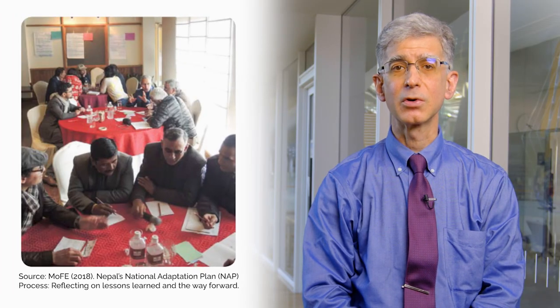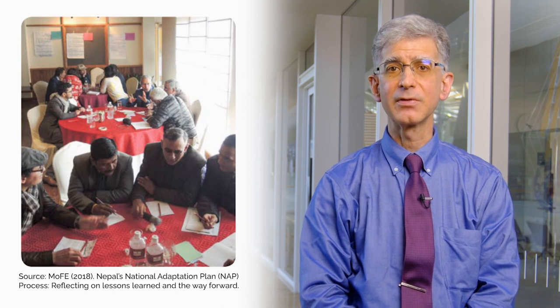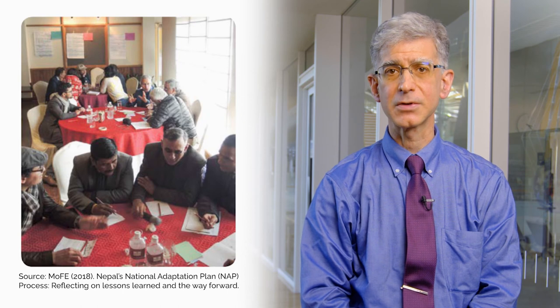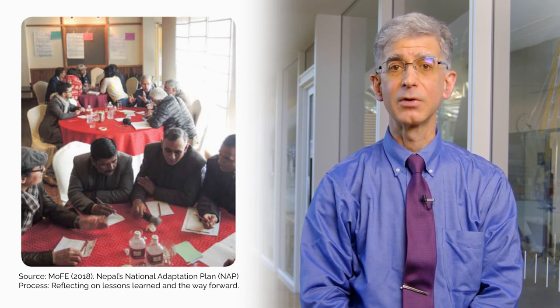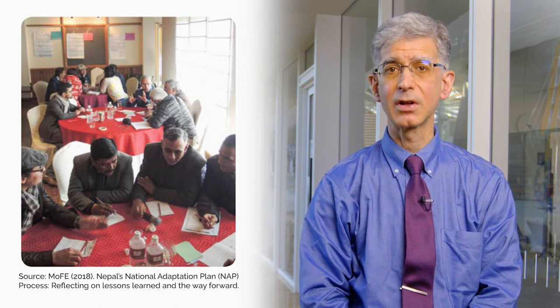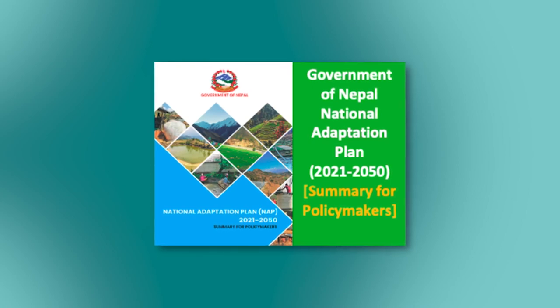Nepal's NAP formulation process followed an integrated working group approach with seven thematic groups and two cross-cutting groups. They exemplified the intersectoral nature of the process and aligned with existing policies and programs. The process was transparent and provided a scientific basis for decision-making. Nepal's NAP process has been unique in its emphasis on inclusive, bottom-up approaches and by producing developmental co-benefits. Finally, in October 2021, Nepal's NAP from 2021 to 2050 was approved by the government.